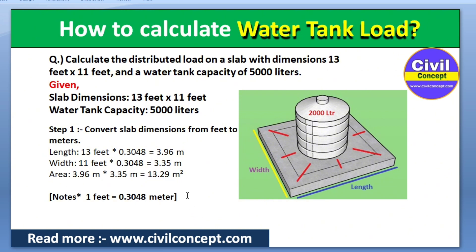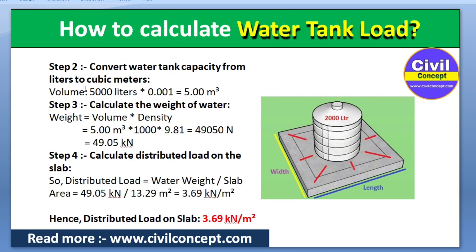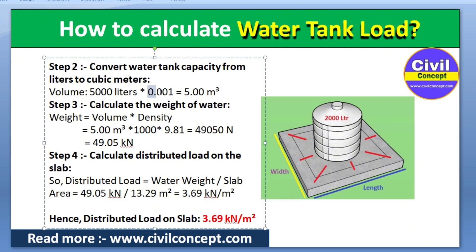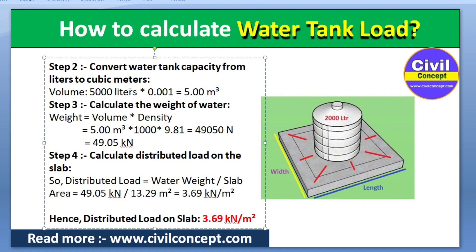In Step 2, we convert the water tank capacity from liters to cubic meters. The water tank capacity is 5000 liters. Multiplying by 0.001 gives us 5 cubic meters, because 1000 liters equals 1 cubic meter. So we now have the volume of the water tank: 5 cubic meters.